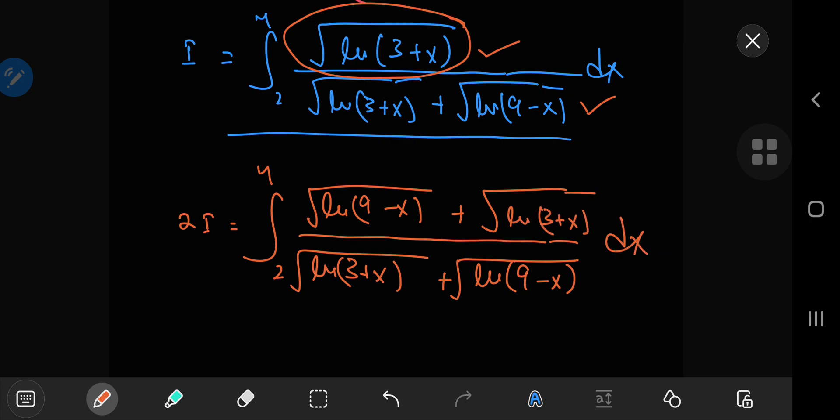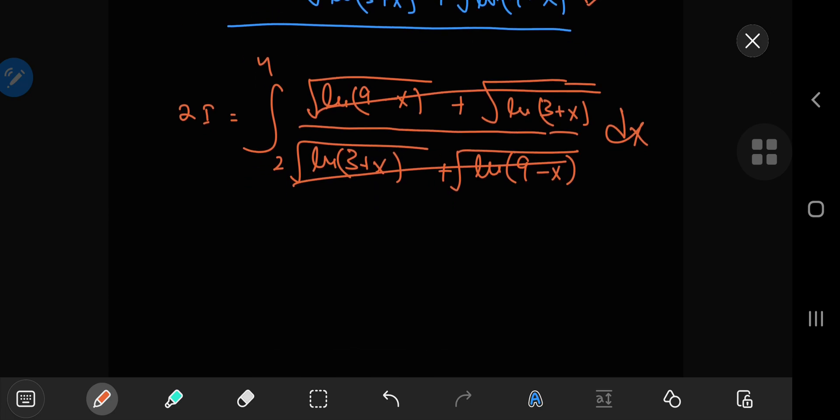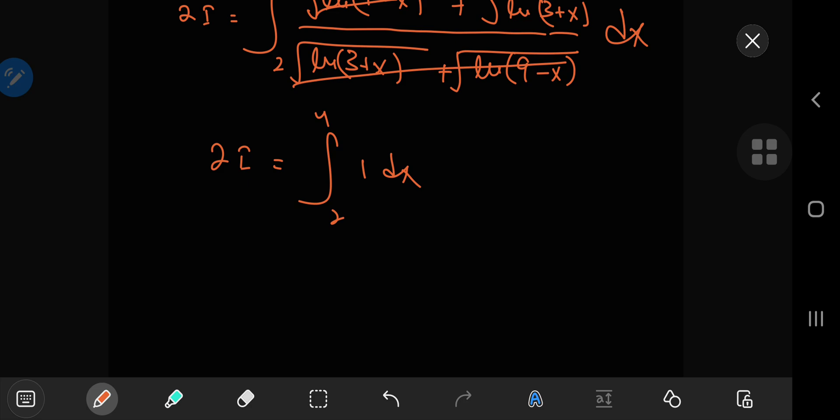So you're just integrating 1 from 2 to 4. And if you divide by 2 on both sides, this will imply that the integral i equals 1.